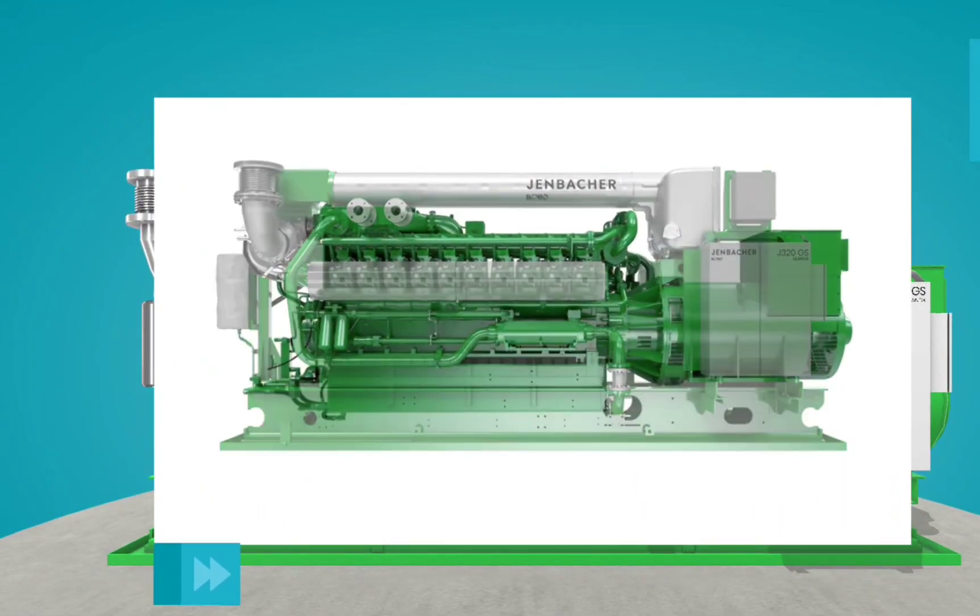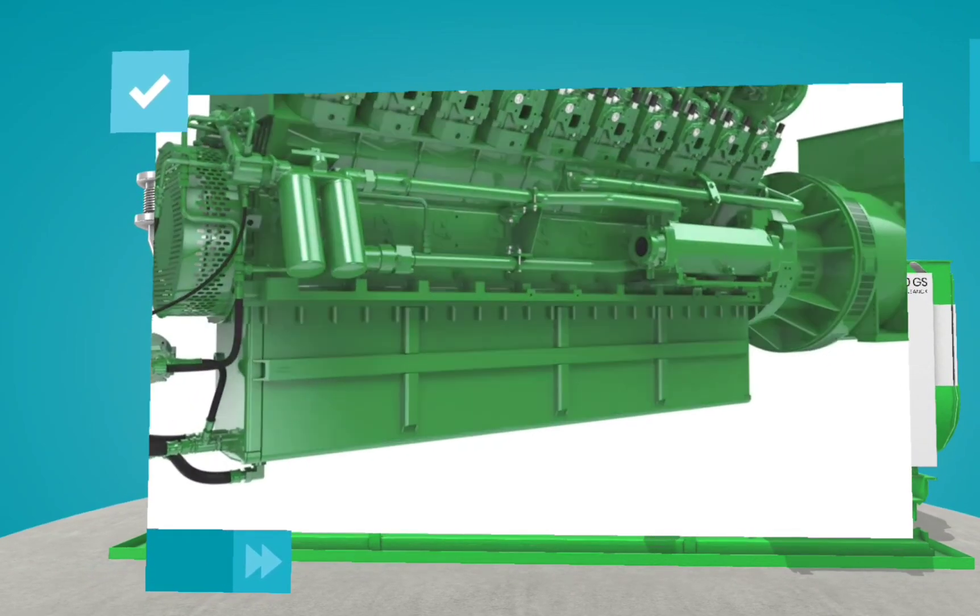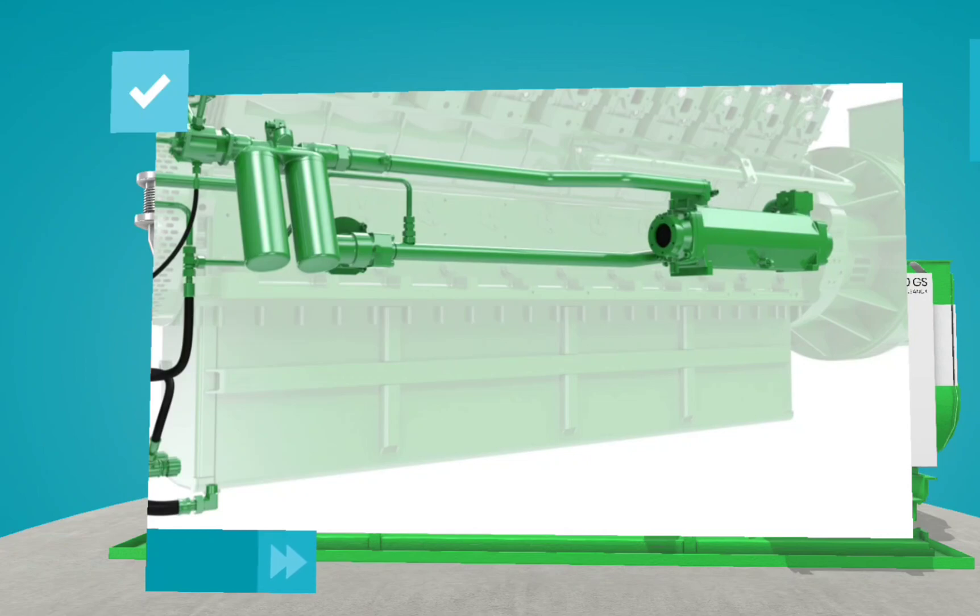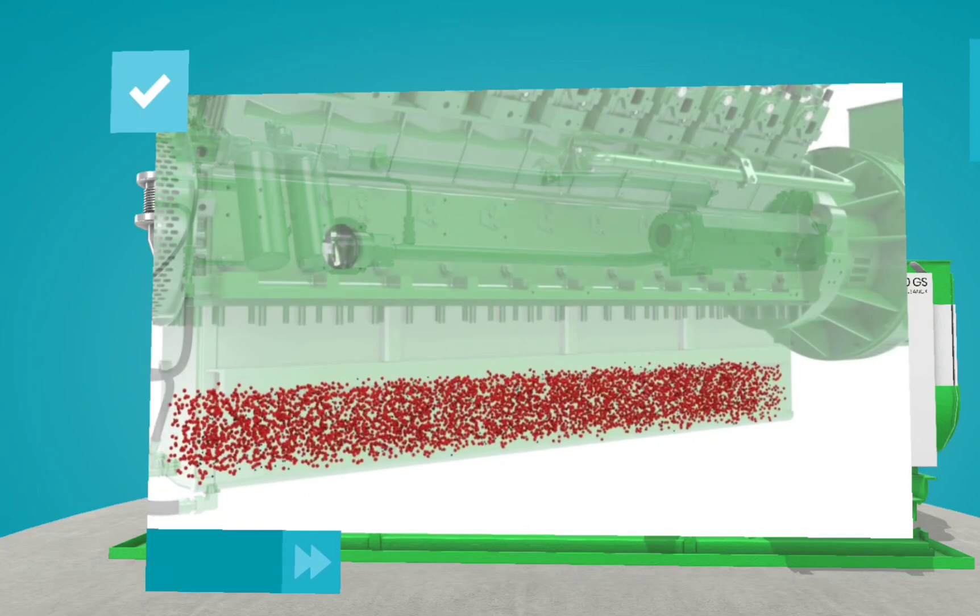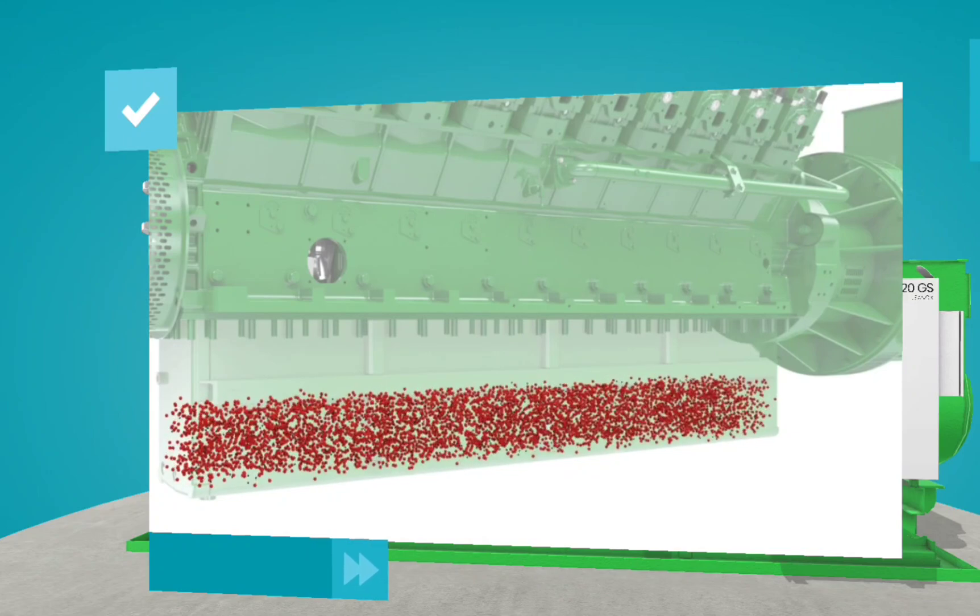Oil takes many paths through the engine, lubricating and cooling moving parts. It begins its journey in the oil pan, a large reservoir of oil directly below the engine block, and is sucked into the oil pump.